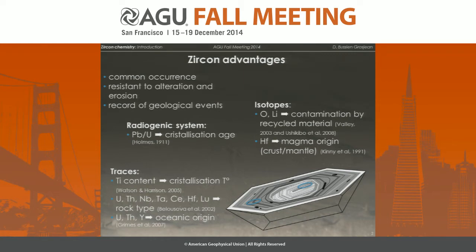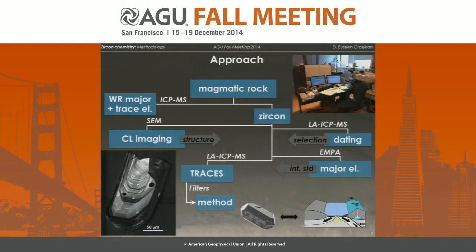Nevertheless, when you have all those parameters, you can't completely constrain the geodynamic settings in which the zircon has been formed. So today I would like to show you our first results — it's still a work in progress — about our project to establish a direct link between the zircon chemistry and the geodynamic context of formation. For this, we have sampled different contexts through magmatic rocks. I insist, it's magmatic zircons today that I'm talking about.